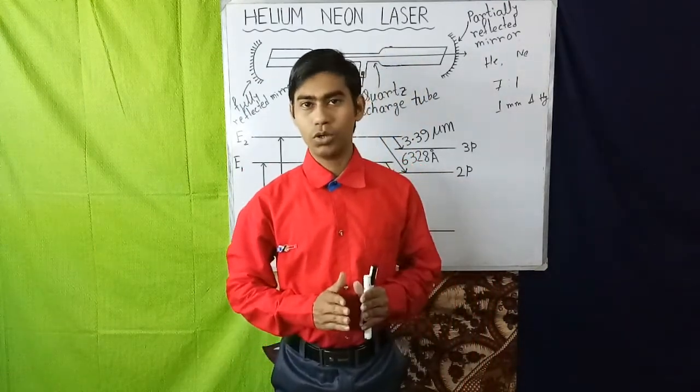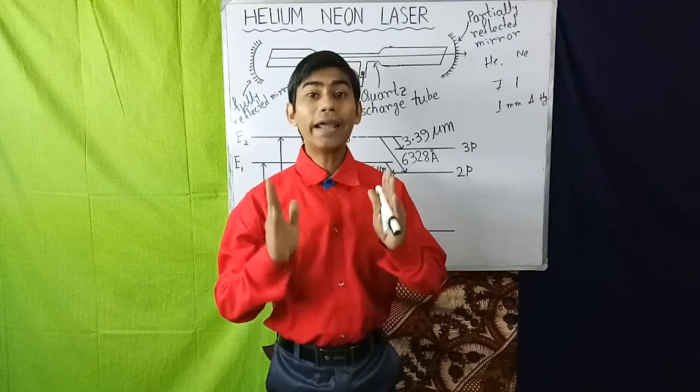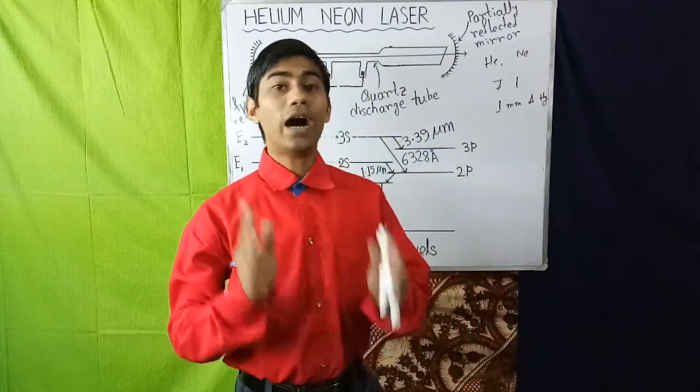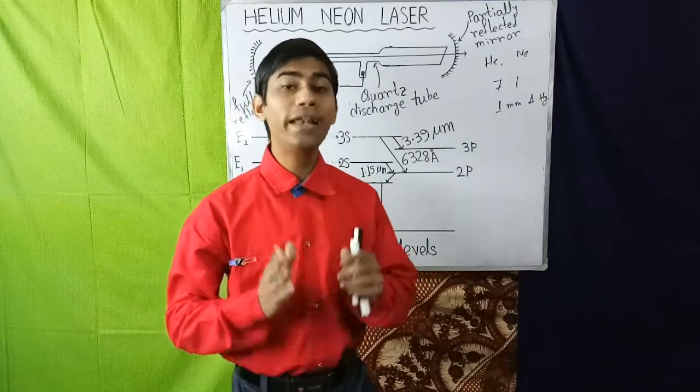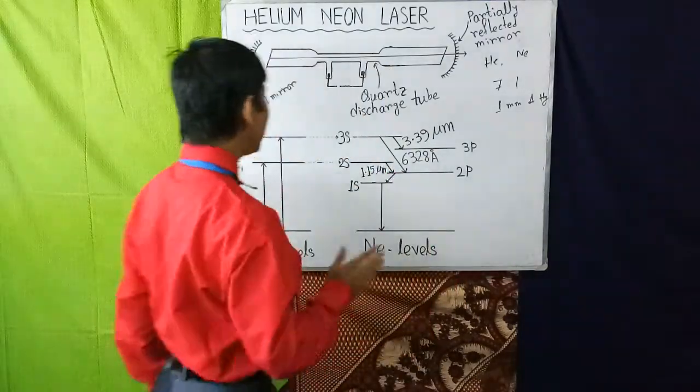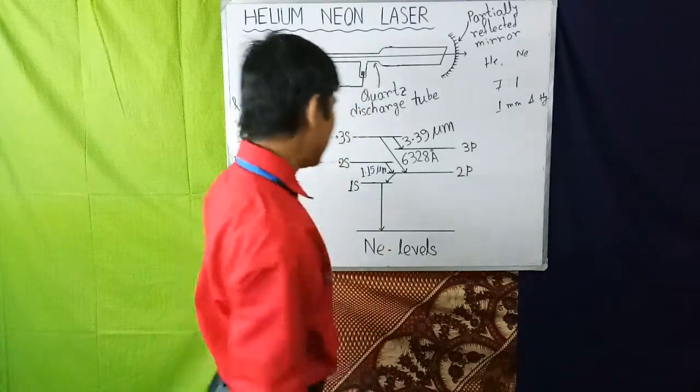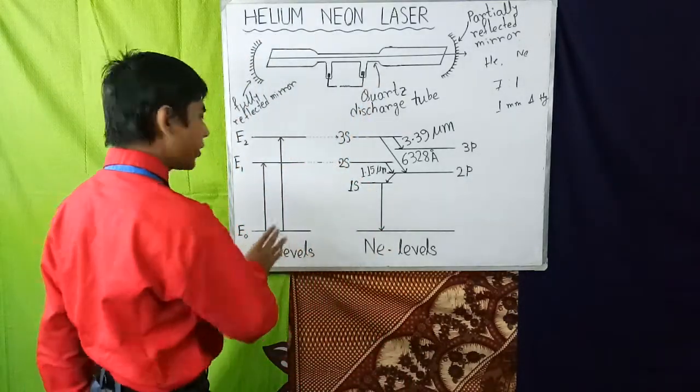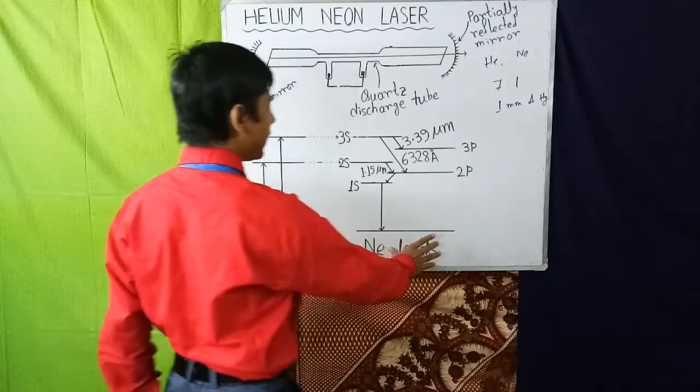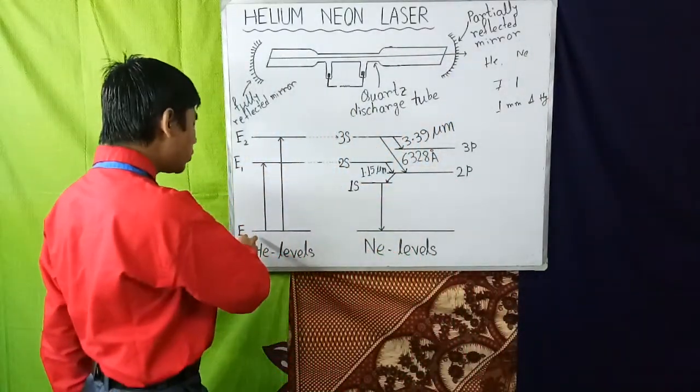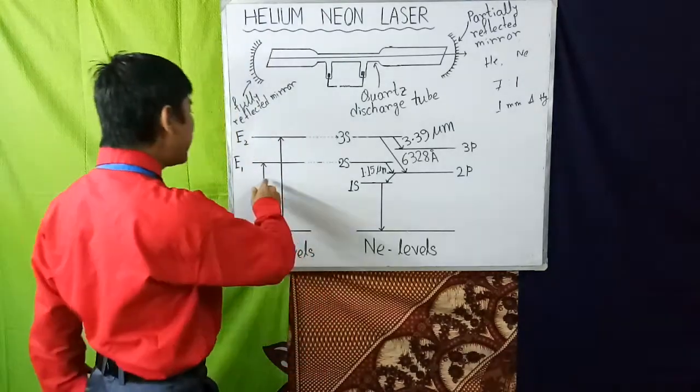Now let's go to the working mechanism of helium neon laser. To understand the operation of helium neon laser we take the help of energy level diagram. This is the energy level diagram for helium atom and this is the energy level diagram for neon atom. Here zero is the ground state and E1 and E2 are the metastable states for helium atom.